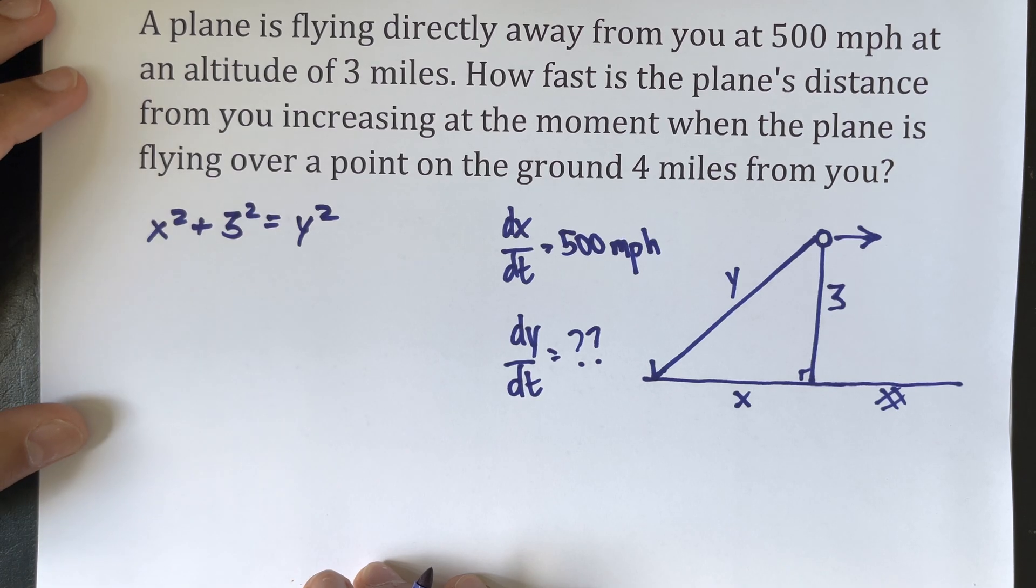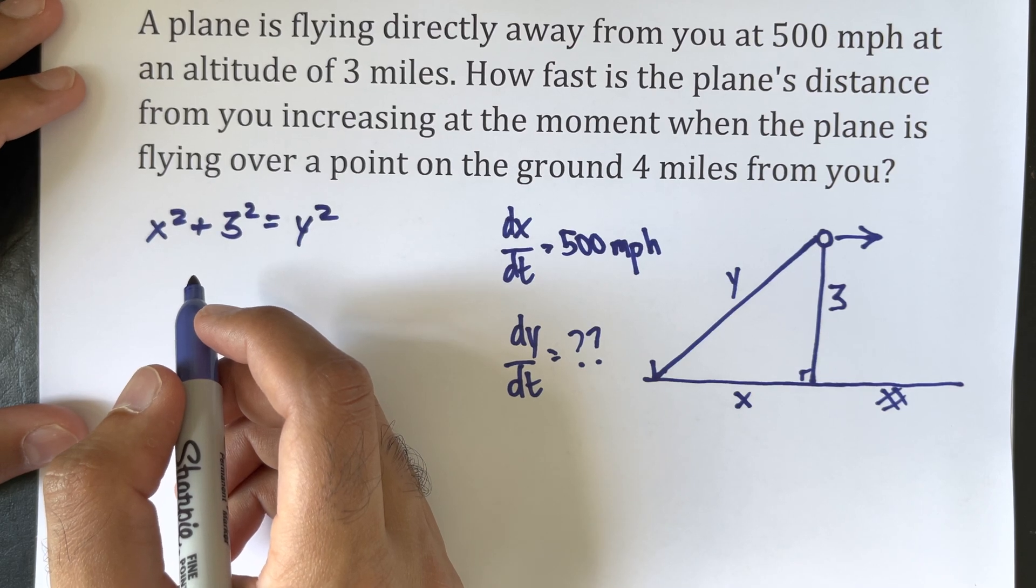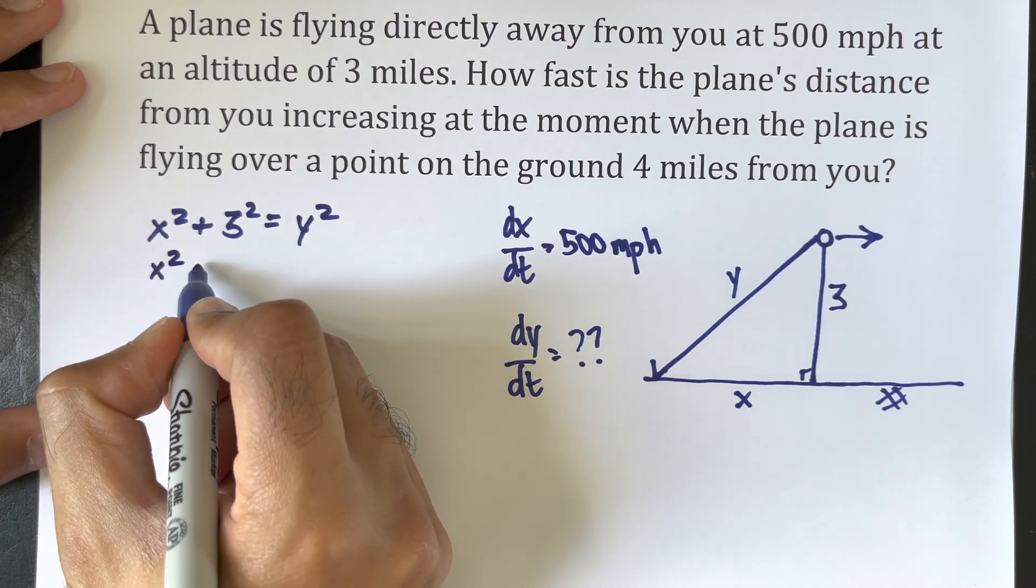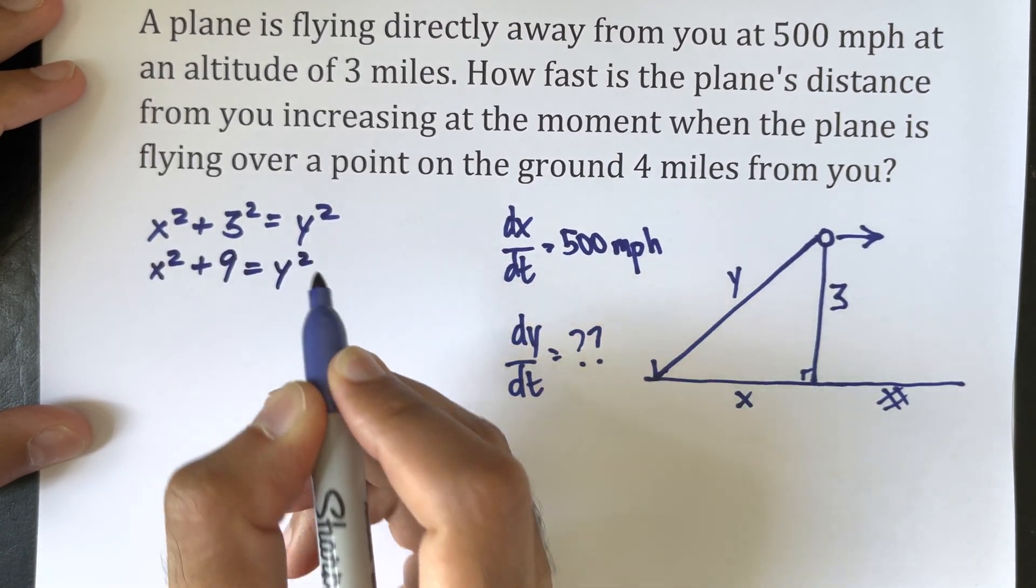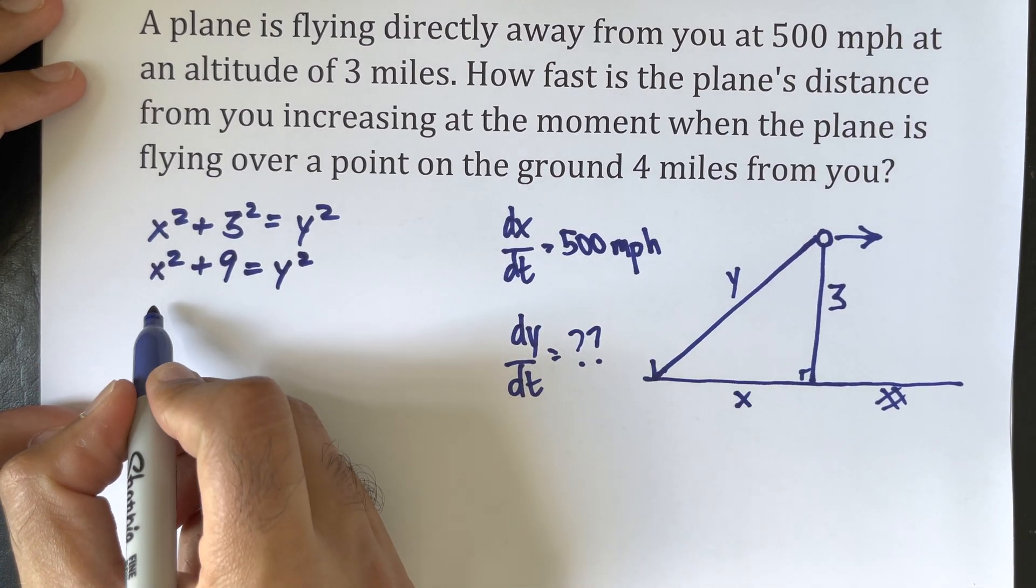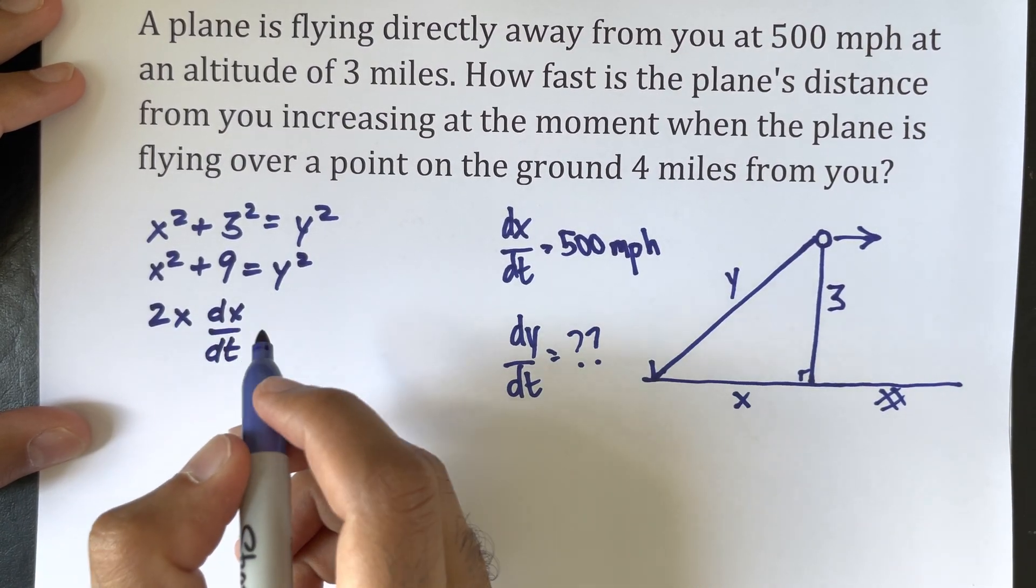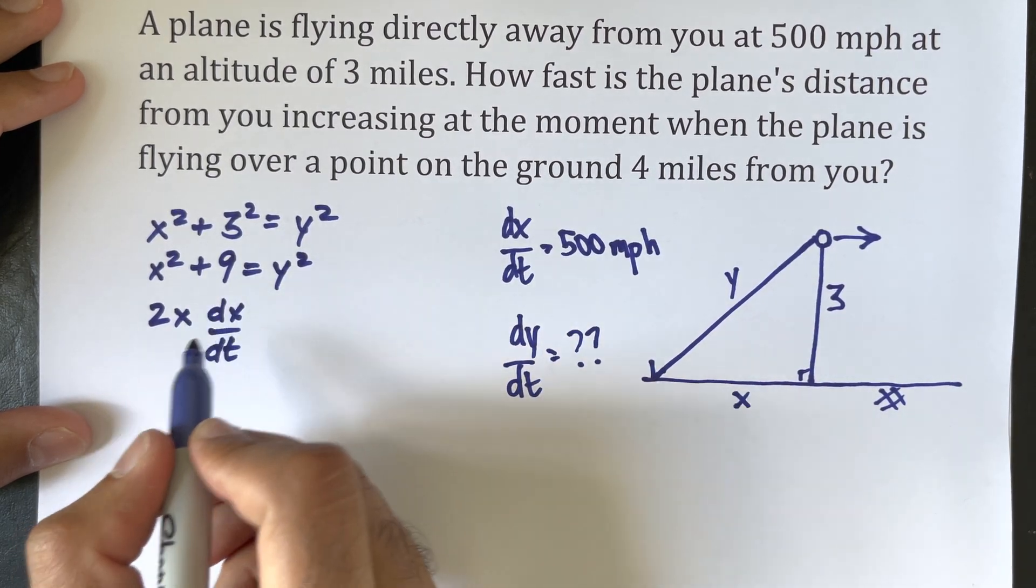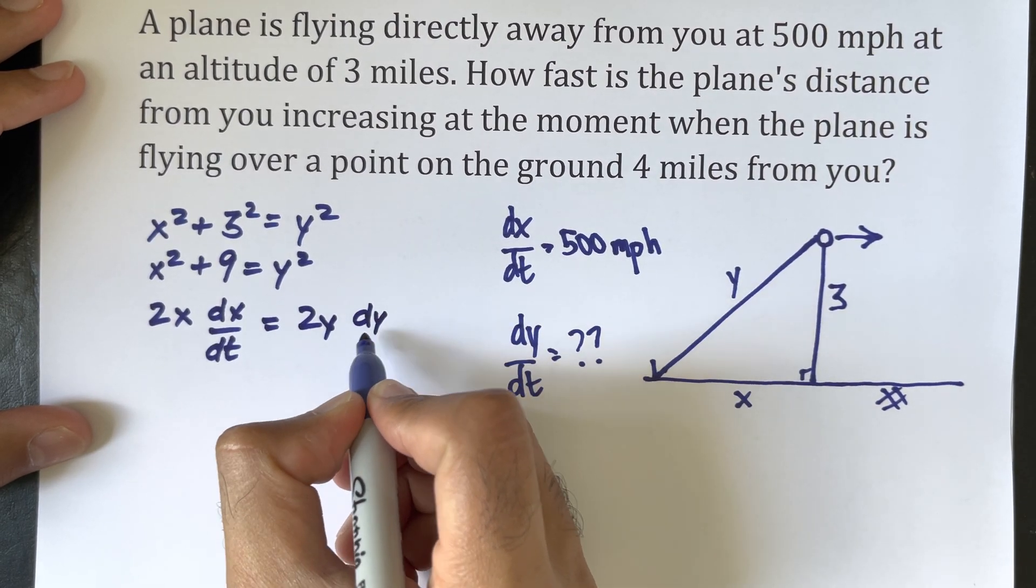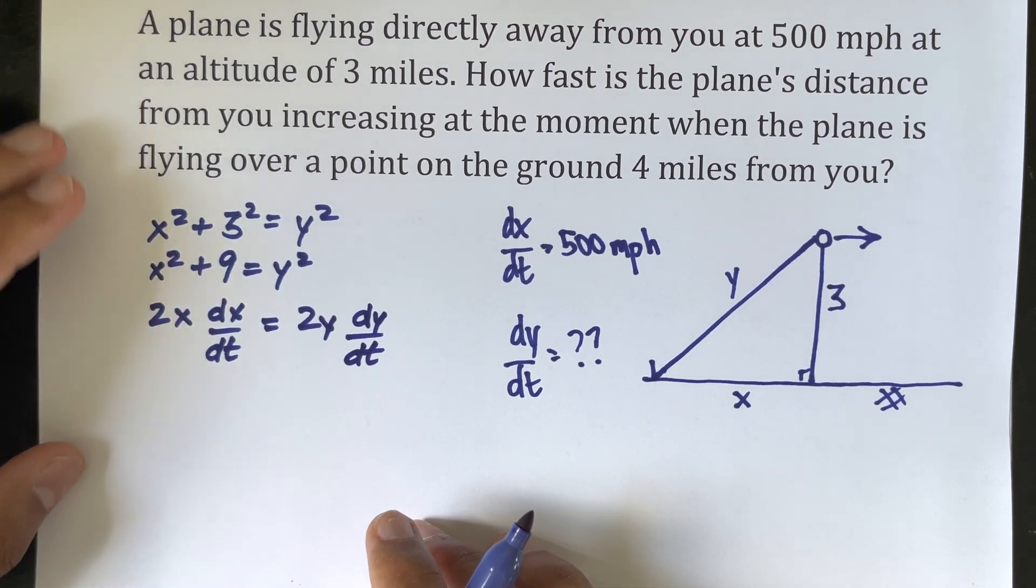And by taking the derivative of both sides of the equation we will get 2x dx over dt, and the derivative of a constant is 0, and then 2y dy over dt. And that is our derivative function.